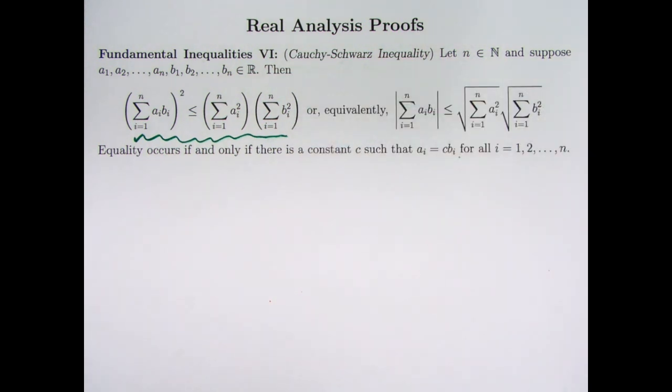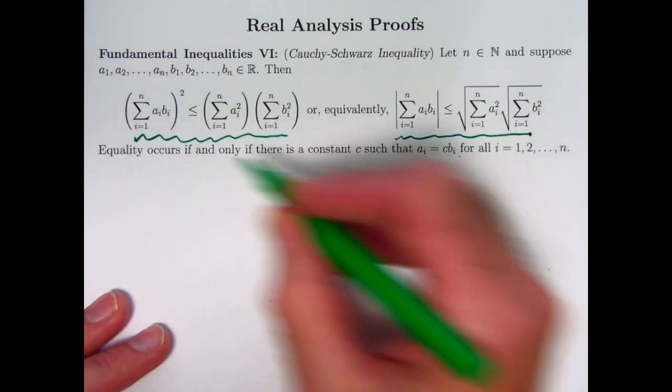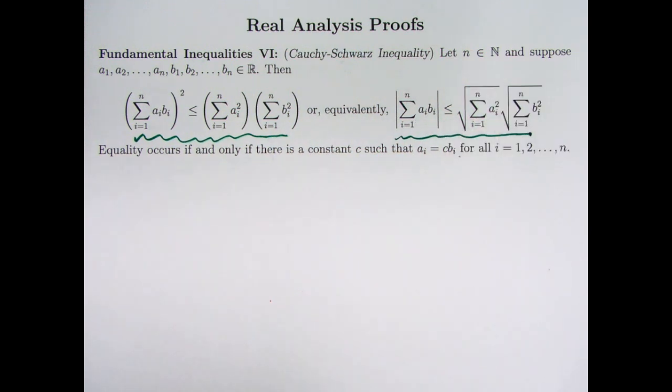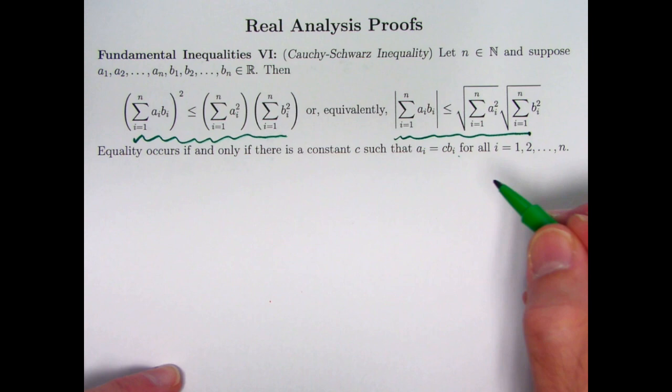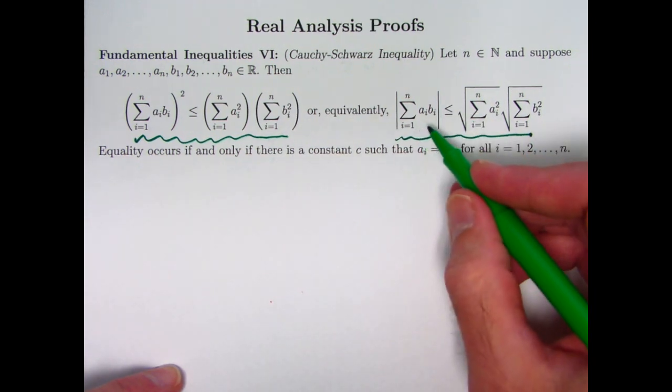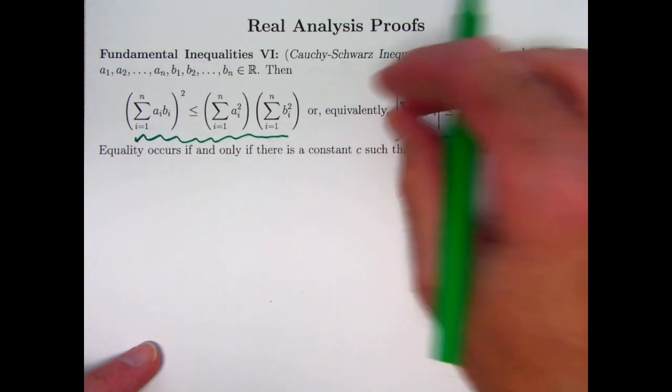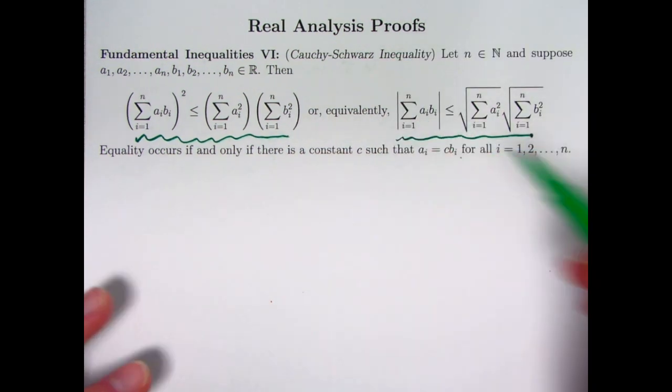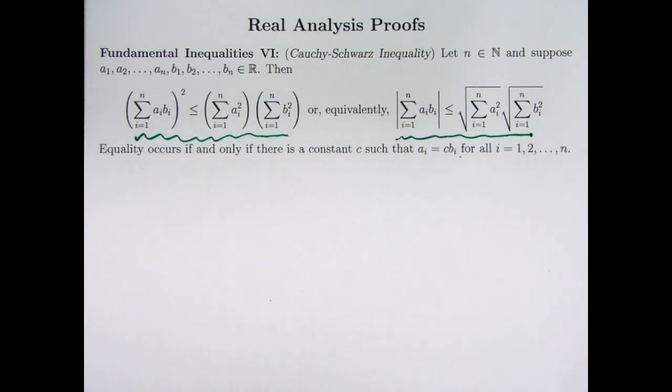You can take the square root of both sides of this and write it in an equivalent form. The square root of something squared is the absolute value of that something, because that something could be negative, is less than or equal to this times this involving square roots. Although by the way, if this is true, which it is, it's also going to be true that you can get rid of the absolute value signs and still get a true statement too, because the thing inside could be negative whereas the product of these two things definitely can't be negative when we're dealing with the real number system here.